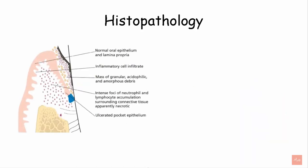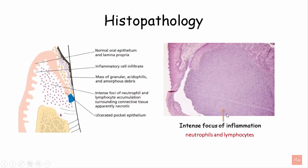Histopathologically, an abscess from external to interior shows normal epithelium and lamina propria, inflammatory cell infiltrate mainly composed of neutrophils and lymphocytes, and an ulcerated epithelium towards the tooth surface. H&E staining shows an intense focus of inflammation mainly occupied with neutrophils and lymphocytes.